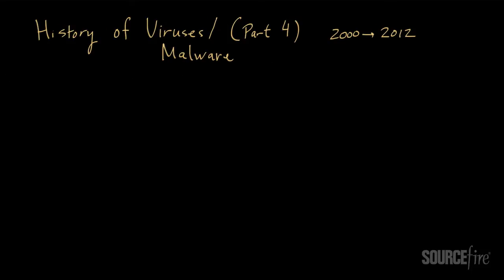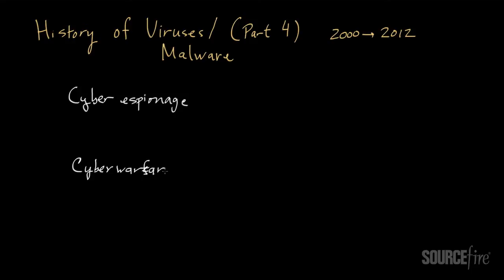The first trend has been in the area of what we call cyber espionage, and the other big trend has been in cyber warfare. In cyber espionage there have been a handful of important use cases, and certainly the big one that kicked it off in the media was an attack called Aurora, also called Hydrak. It affected a number of big companies — Google was one of them — but there were also a number of other companies targeted by this particular attack.